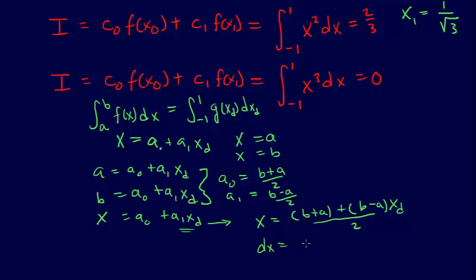And then our dx, we can get that just by taking the derivative of this, so dx equals (b - a)/2 dxd, which is just, take the derivative of this and you get just get this last part, so a₁ xd, so that's what this is, a₁ xd.